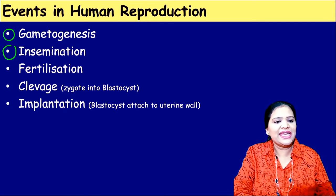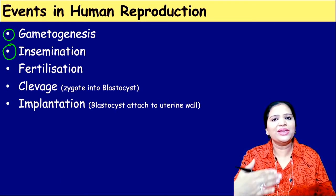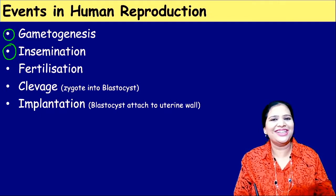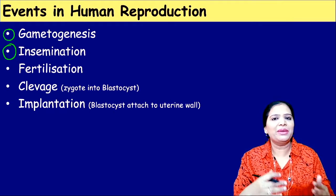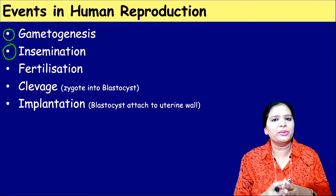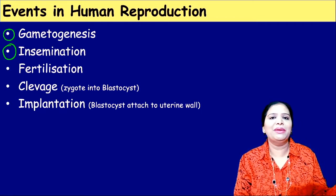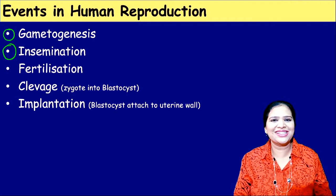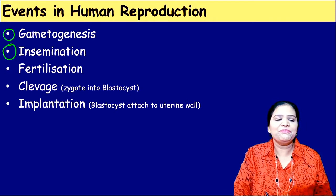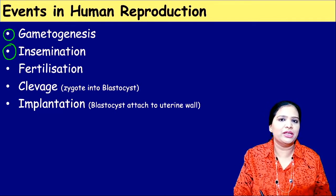The second step is insemination. The male gamete should reach the female gamete — this reaching process is called insemination. In the majority of organisms in sexual reproduction, the female gamete stays in one place and the male gamete travels to reach it. Even in flowers it is like this. That process — the reaching and meeting of the male gamete with the female gamete — is called insemination.